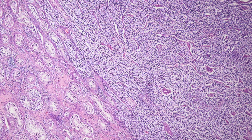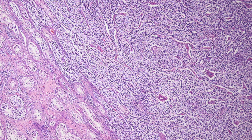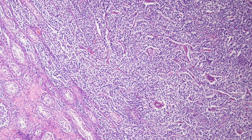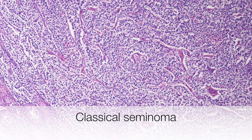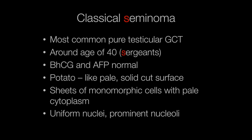Case number eight was a testicular mass from a 20-year-old male with a firm pale cut surface. The LDH was 577, AFP 1, beta-HCG less than 1. This is a classical seminoma. Classical seminomas are the most common pure testicular germ cell tumour, occurring around the age of 40. The LDH is typically raised, but beta-HCG and AFP are usually normal. The cut surface typically resembles the cut surface of a potato. Histologically the tumours are composed of sheets of monomorphic cells with pale cytoplasm, uniform nuclei, and prominent nucleoli.